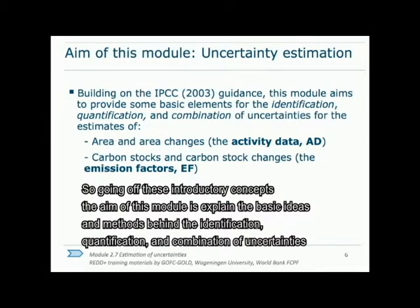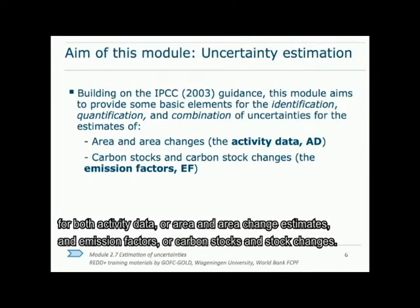Building off these introductory concepts, the aim of this module is to explain the basic ideas and methods behind the identification, quantification, and combination of uncertainties for both activity data — or area and area change estimates — and emission factors, or carbon stock and carbon stock changes.